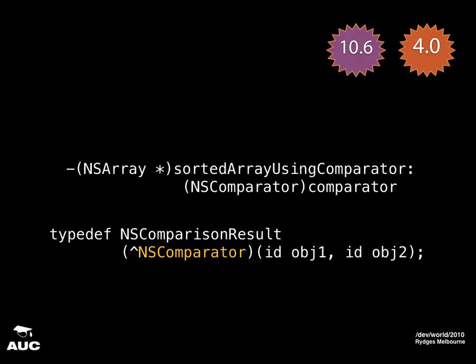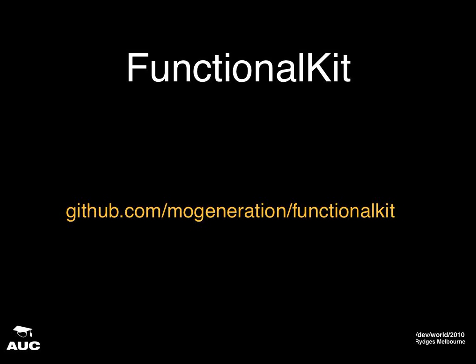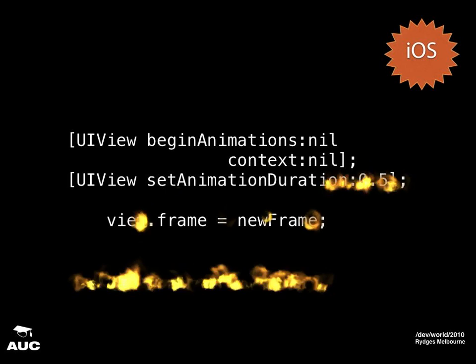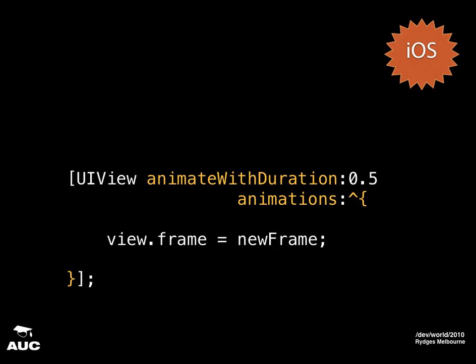This is bordering on functional programming. Some folks took blocks and made functional programming extensions for Objective-C — it's called FunctionalKit, and you can find it on GitHub. Now for phone developers: the old way of doing animations uses UIView beginAnimations, sets properties, changes what you want, then commits — as long as you remember to call commitAnimations, because if you don't, nothing animates. So they added a block-based version where the compiler matches the curly braces and you'll never forget to commit.